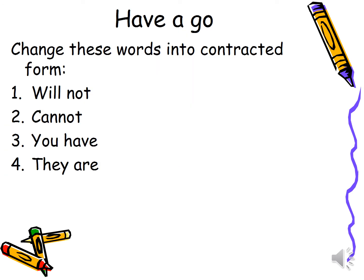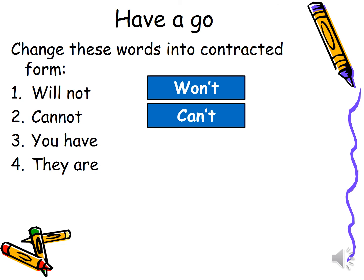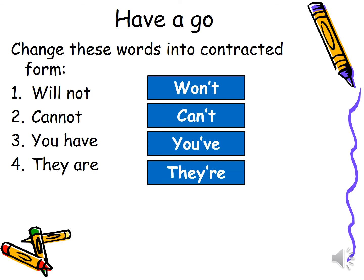You have a go now — change these words into the contracted form. 'Will not': what vowels are going to change? 'I will not' becomes 'I won't.' Fantastic. 'Cannot' becomes 'can't.' Super — 'I can't go outside this afternoon because it's raining.' 'You have a really cool car — I think it's great' becomes 'You've got a really nice car.' And 'they are going outside' becomes 'They're going outside' with the apostrophe.